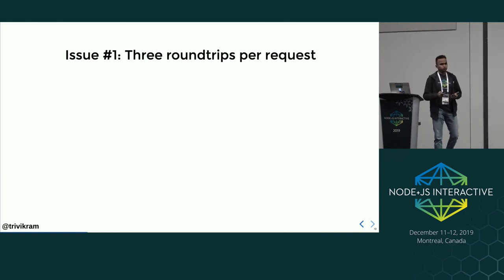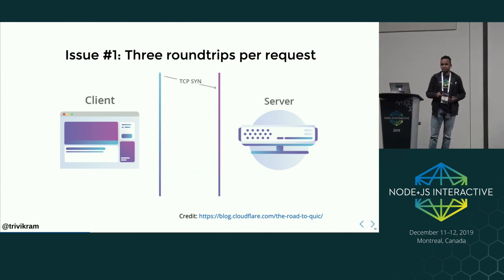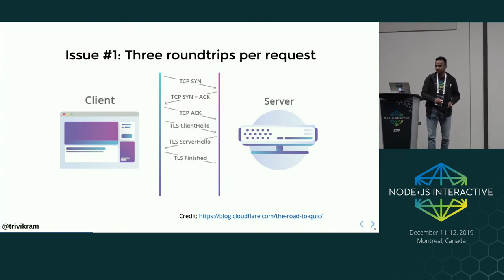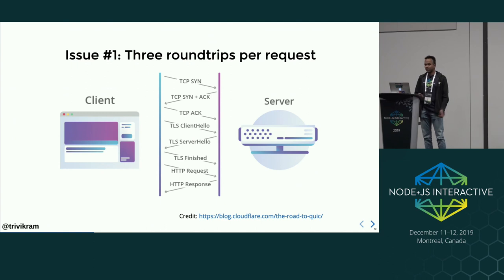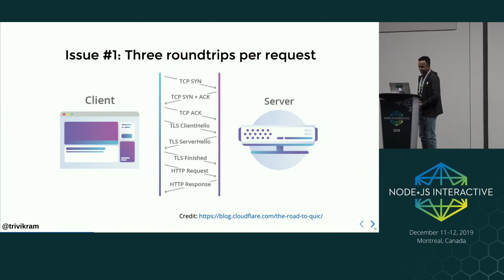Let's look at the issues with HTTP/1.1. The first issue is three round trips per request. The client sends a TCP SYN packet, then the server sends TCP SYN-ACK, the client sends TCP ACK. Then the client says TLS client hello, server responds with TLS server hello, then the client says TLS switch — and still the request has not been sent. Then the HTTP request is sent and the HTTP response comes. Three round trips per TCP connection — who has time for this?